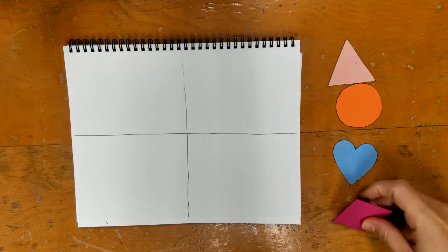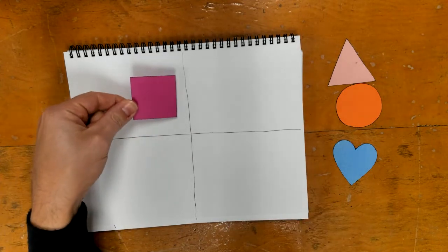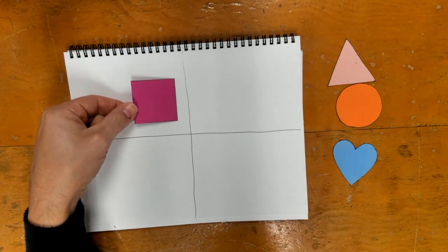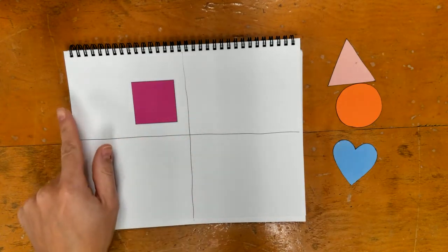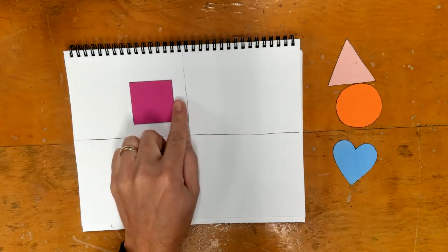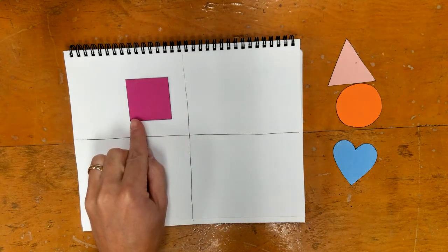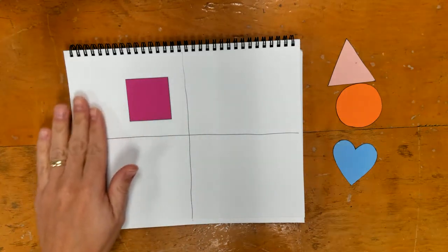Now I'm going to take my shapes and I want you to watch where I put them. And I want you to watch what shapes I'm putting where. So I have my square. I'm going to move it over so that it's closer to the line. But I still want to have a little bit of space between the line and the square. But I want to have a lot of white space over here.